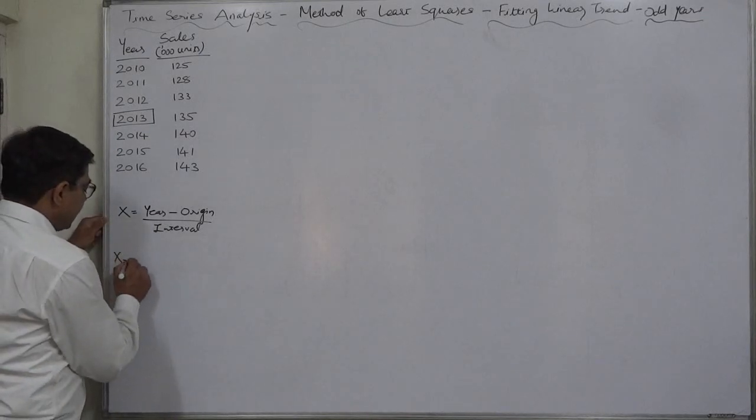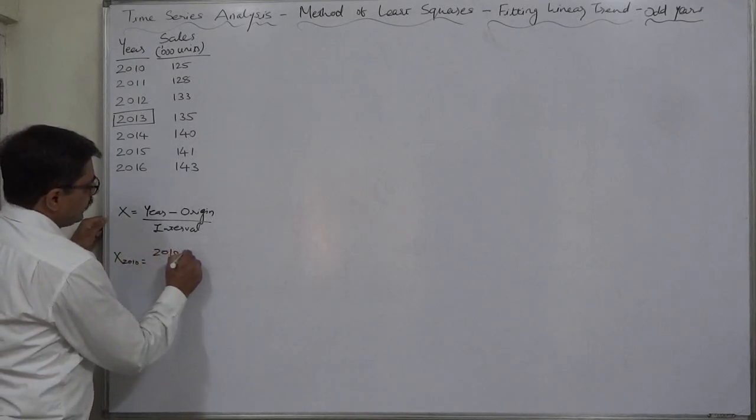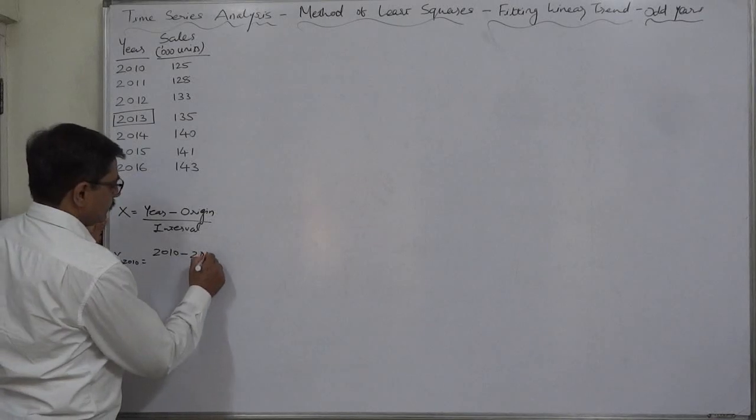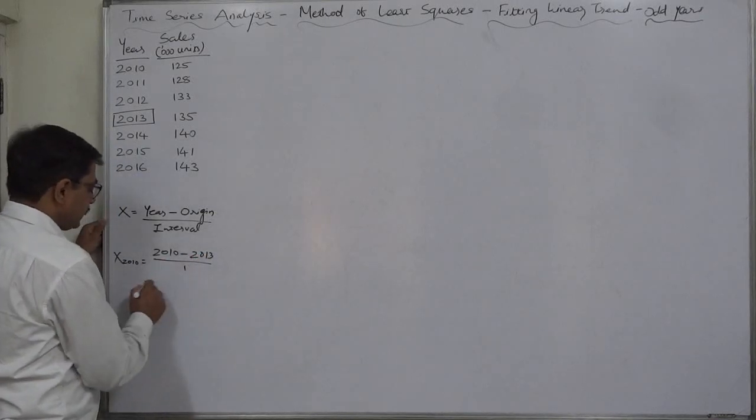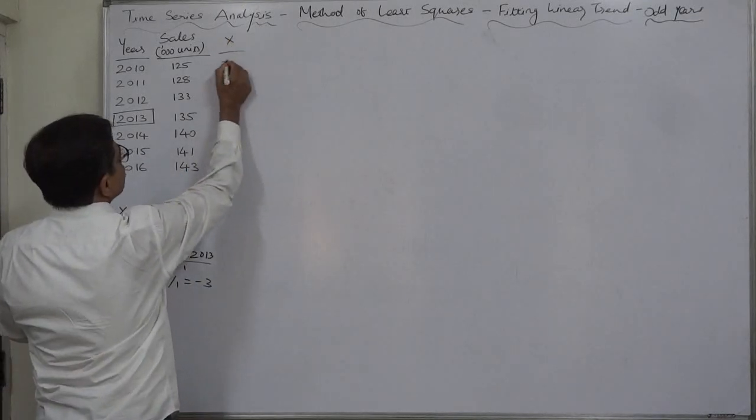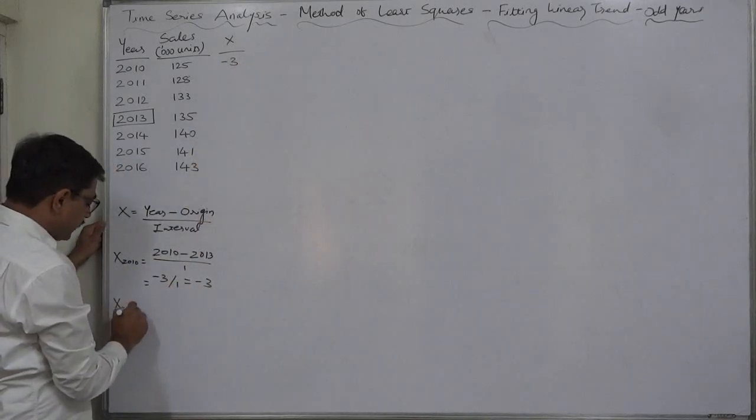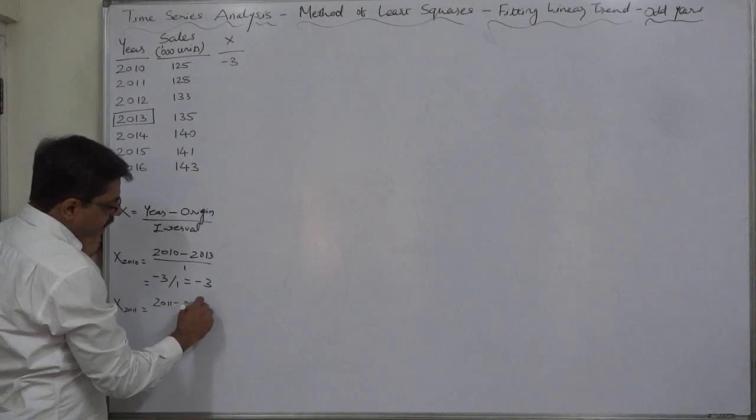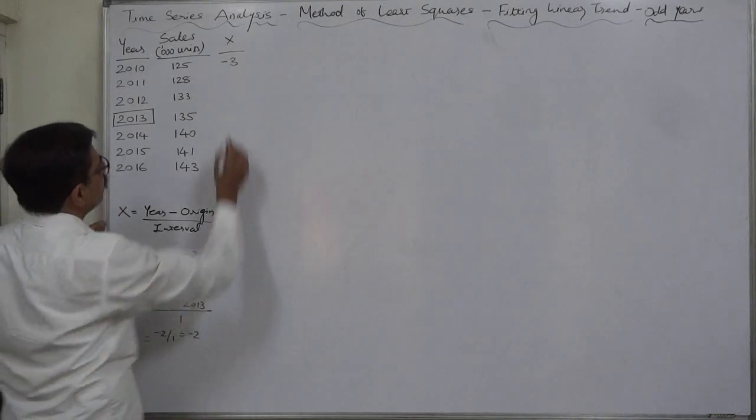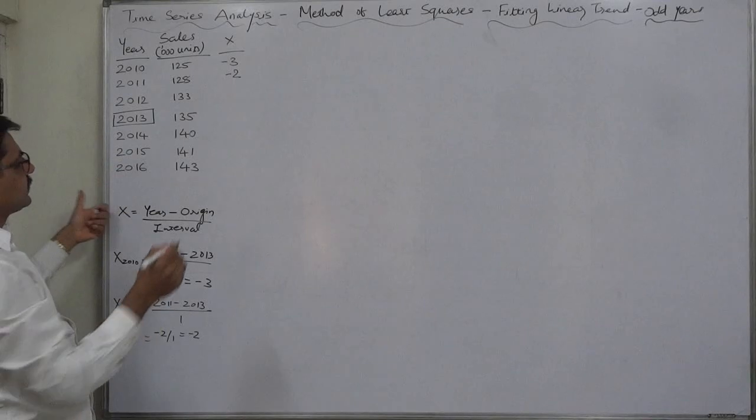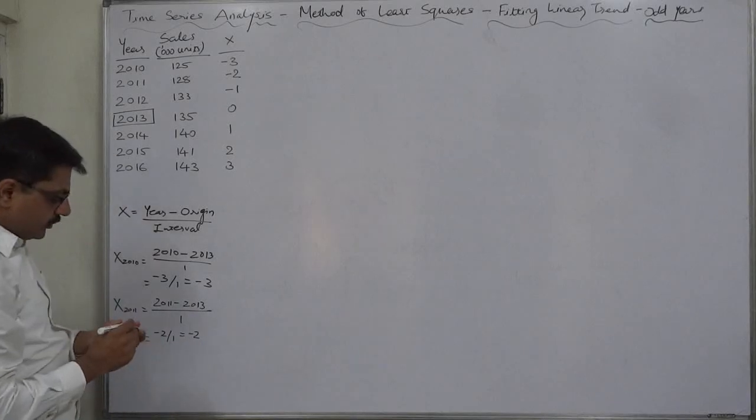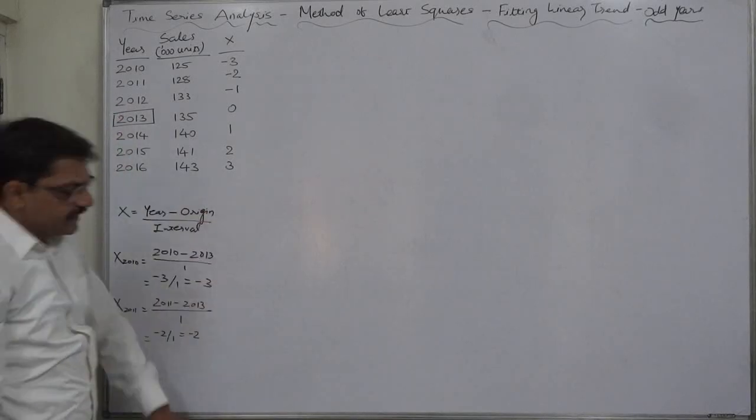So X for the year 2010 will be 2010 minus origin 2013 divided by interval 1 in this case, so it is minus three divided by one, minus three. Similarly X for 2011, the year 2011, will be 2011 minus origin 2013 divided by interval of 1, so it will be minus 2 by 1, that is minus 2. Since these are the consecutive years it will be like this. You can find out X for all the years in this way arithmetically.